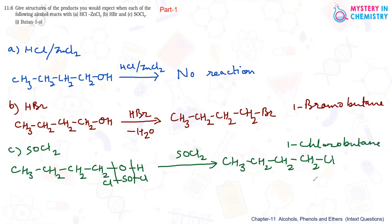And with this, one product is HCl and second product is SO2 gas. This reaction is important also for the preparation of alkyl halide because the byproduct HCl and SO2, both are gases. So they will leave the reaction mixture and you can get the pure alkyl halide.